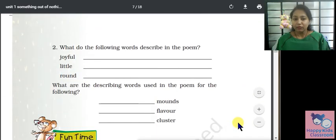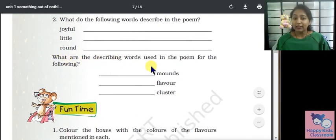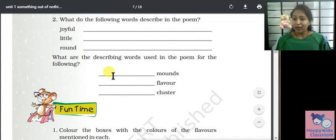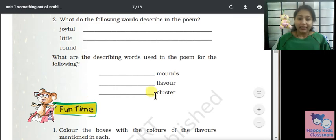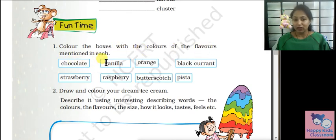What did the following words describe in the poem? Joyful — a joyful sight. Little — little cart. Round — round umbrella. What describing words are used for: mounds — flavor such as vanilla, chocolate, strawberry. Thick — thick cluster. Color the boxes with the colors of the flavors mentioned.